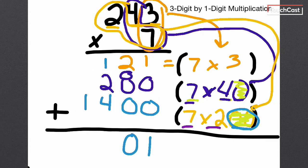Four and two is six, plus one more is seven. And then drop down my one, since there's nothing else to add it to. That gives me an answer. 243 times seven is 1,701.